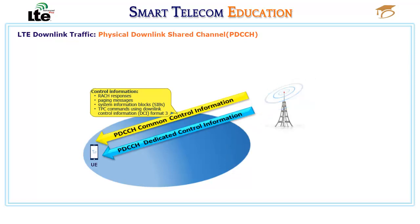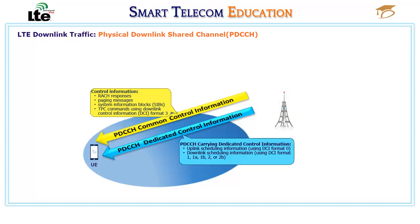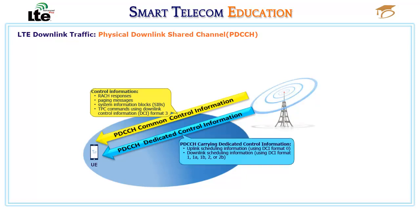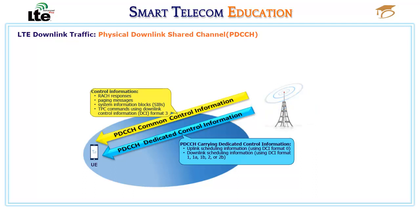The PDCCH carries the following types of dedicated control information: uplink scheduling information using DCI format 0, and downlink scheduling information using DCI format 1, 1A, 1B, 2, or 2B.